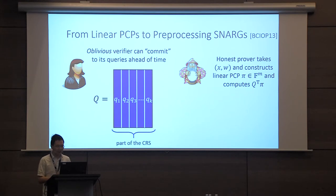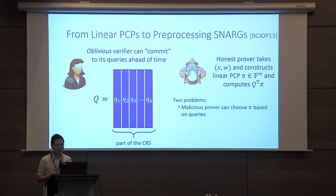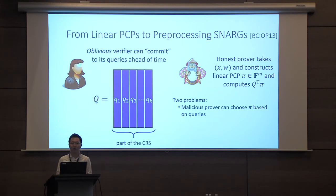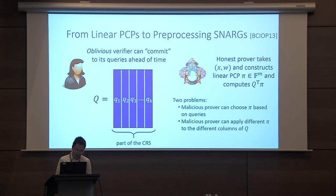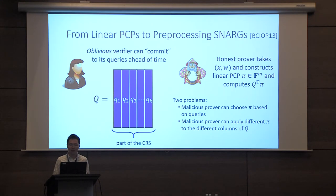This is a great analogy, but it doesn't quite work — there are many problems with this basic construction. First, the malicious prover can actually choose the proof based on knowledge of the queries. If we simply publish the queries in the clear in the CRS, this cannot possibly work because the prover can now choose its proof based on what the verifier is going to check. Moreover, the malicious prover is not really constrained to only evaluating linear functions — it can do arbitrary things when constructing its proof. So we need some way of addressing both of these problems.